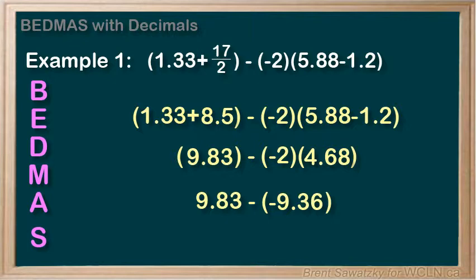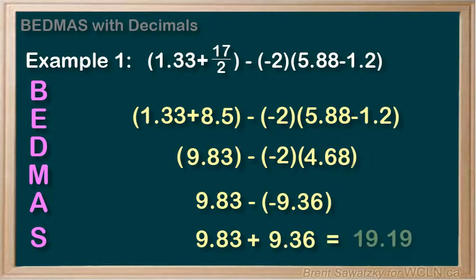Last step is to subtract. Let's clear out the brackets to make this simpler. A minus minus is a plus, so 9.83 plus 9.36 equals 19.19. And that's our final answer.